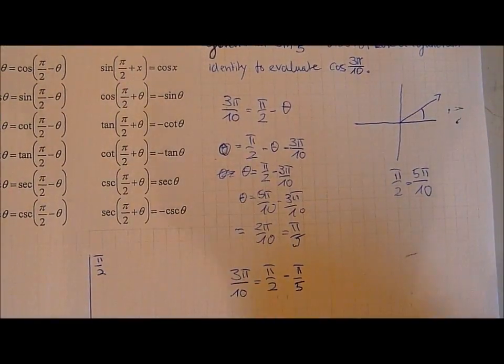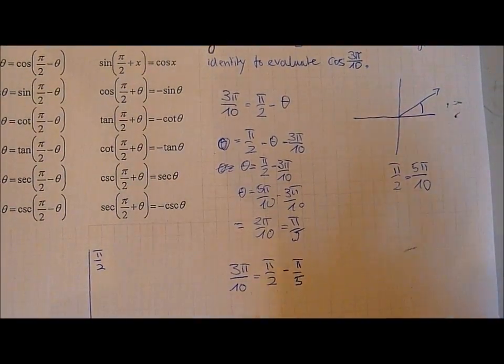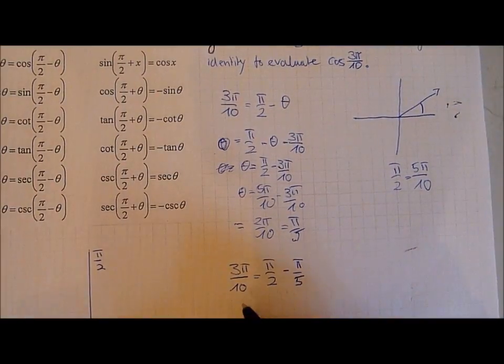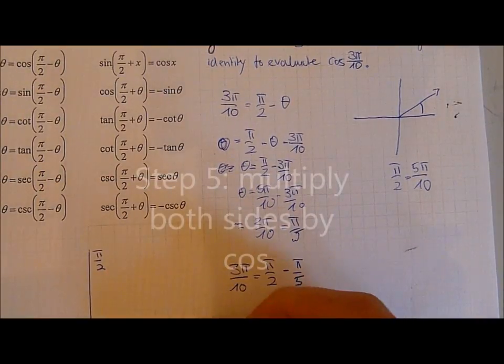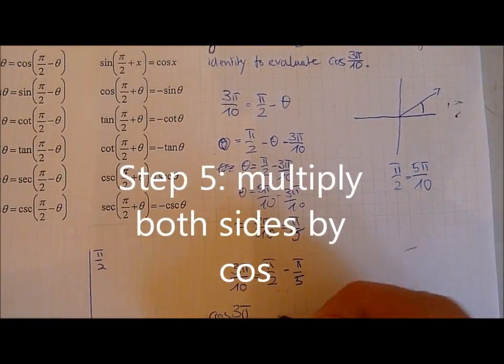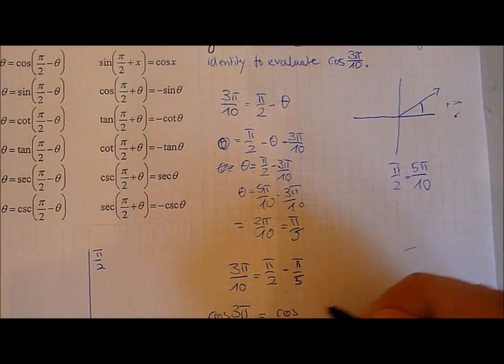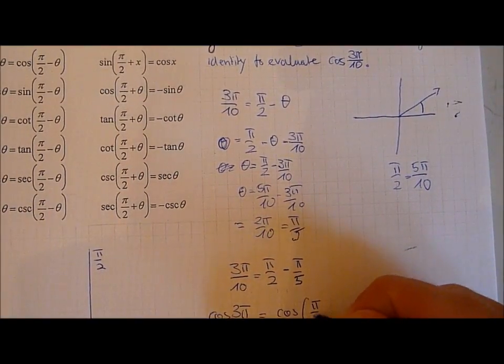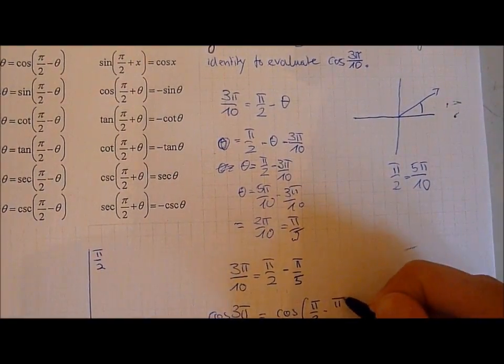Now we originally started out with cos 3 pi over 10 so we want to bring this back into the old form. And we can do this by simply multiplying both sides by cos. So cos 3 pi over 10 is equal to the cos of pi over 2 minus pi over 5.